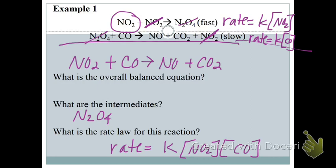The overall rate law has NO₂ and CO multiplied — we're adding the rate laws together, but the rate law itself always multiplies the concentrations. In this case, we determined the rate law from the slow step. But if you're ever given data, you always use the data. The true way to determine a rate law is experimentally — it's determined experimentally.